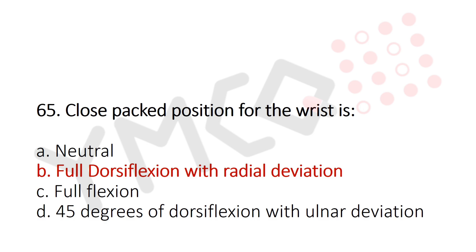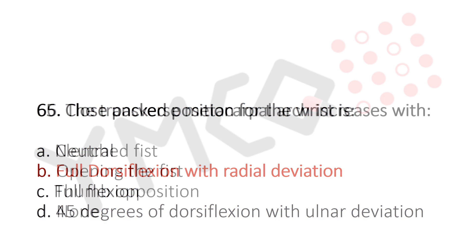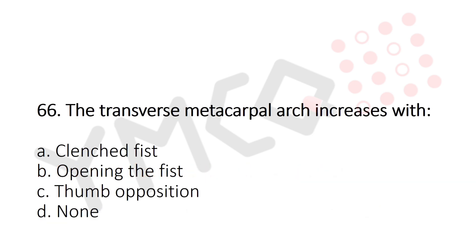Question 66: The transverse metacarpal arch increases with — Option A: clenched fist, Option B: opening of the fist, Option C: thumb opposition, Option D: none. The answer is Option C, thumb opposition.